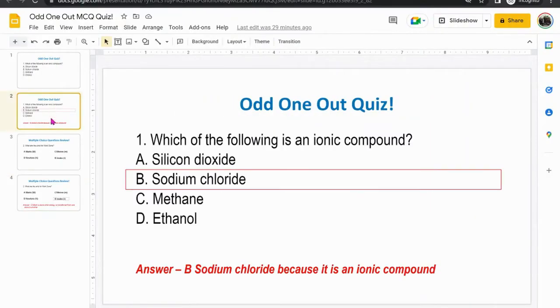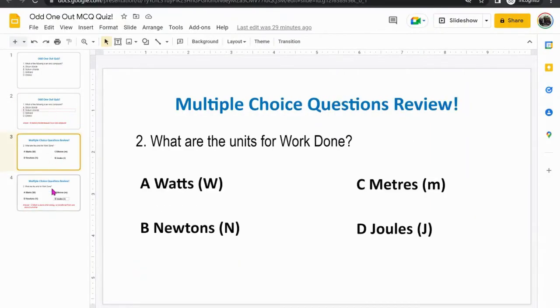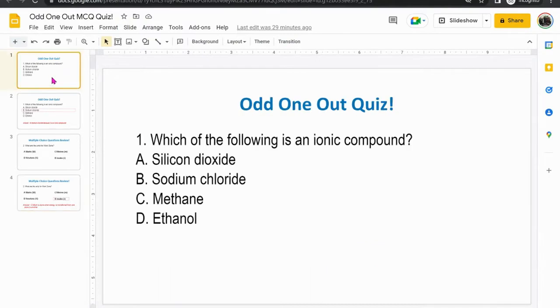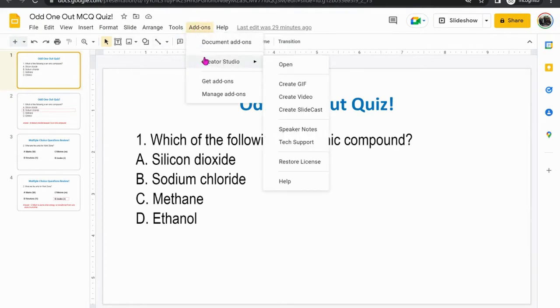Using Google Slides you can see that I've created four slides with alternating questions and answers and we will convert this into a GIF by going to add-ons, selecting Create a Studio, select Create GIF.